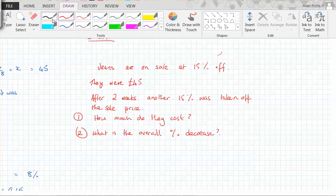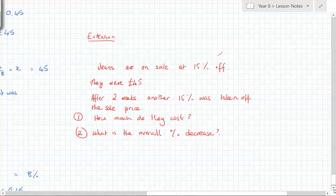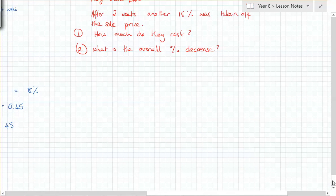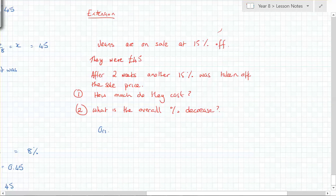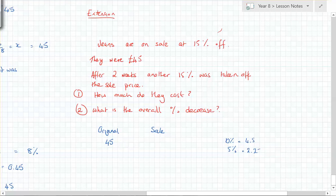Let's see how you solved it. This is what we call a repeated percentage problem. Starting with £45: find 10 percent, which is £4.50, then 5 percent, which is £2.25. Add them together to get £6.75, and subtract to get the first sale price of £38.25.